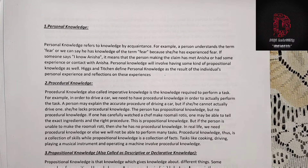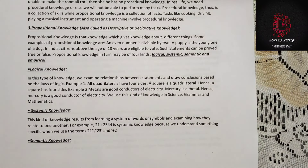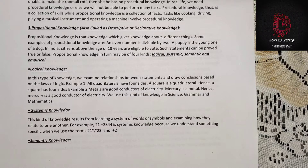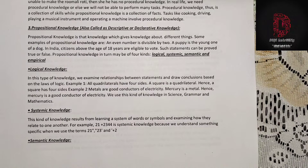The third type is propositional knowledge, also called descriptive or declarative knowledge. Propositional knowledge gives knowledge about different things. Some examples are: an even number is divisible by two; a puppy is a young one of a dog; in India, citizens above the age of 18 years are eligible to vote. Such statements can be proved true or false. Propositional knowledge may be of four kinds: logical, systematic, semantic, and empirical.